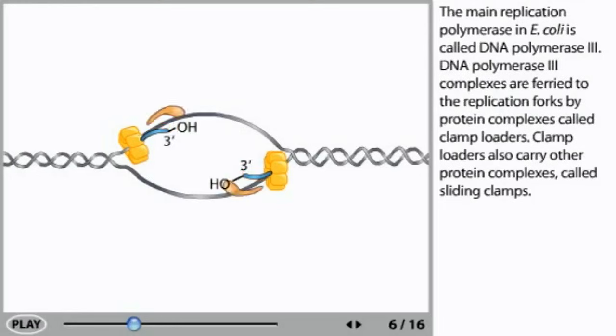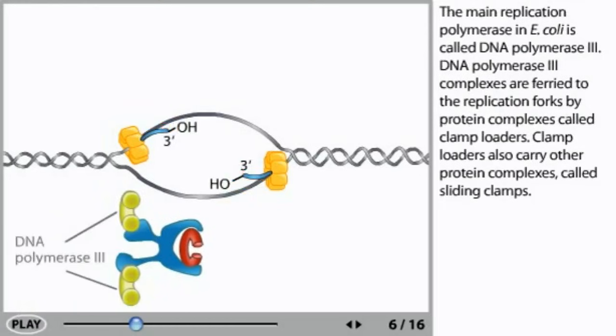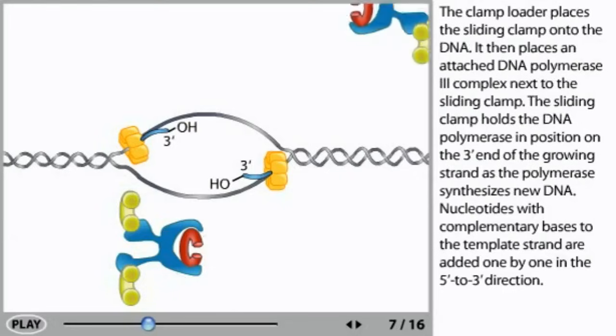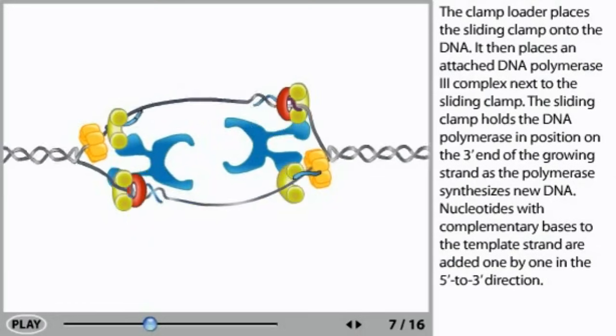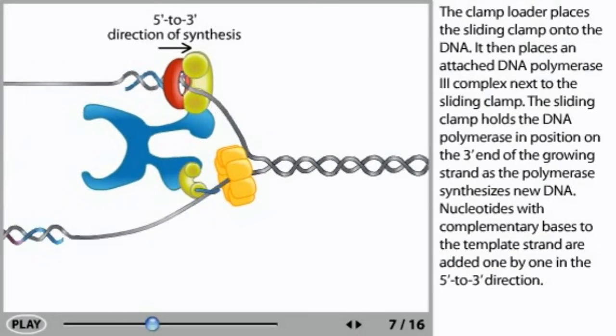The main replication polymerase in E. coli is called DNA polymerase III. DNA polymerase III complexes are ferried to the replication forks by protein complexes called clamp loaders. Clamp loaders also carry other protein complexes called sliding clamps. The clamp loader places the sliding clamp onto the DNA, then places an attached DNA polymerase III complex next to the sliding clamp. The sliding clamp holds the DNA polymerase in position on the 3' end of the growing strand as the polymerase synthesizes new DNA.